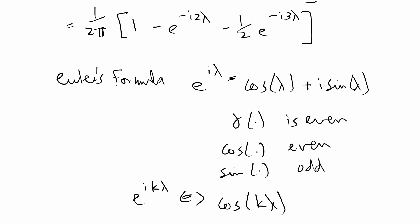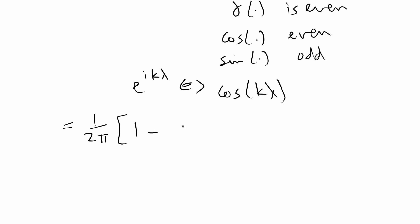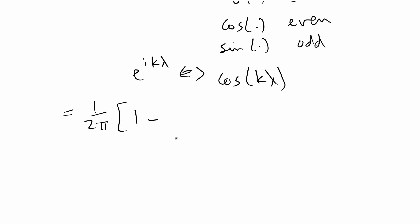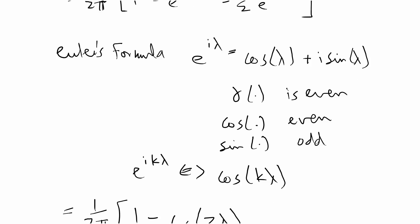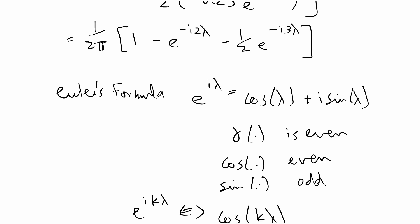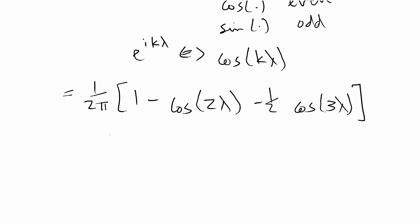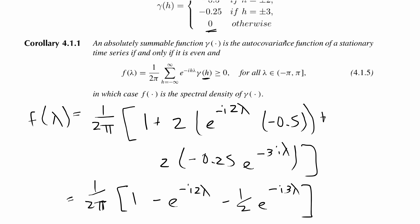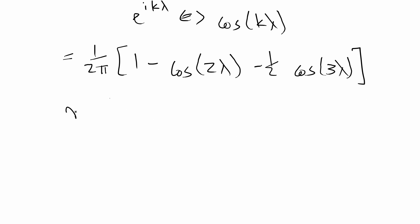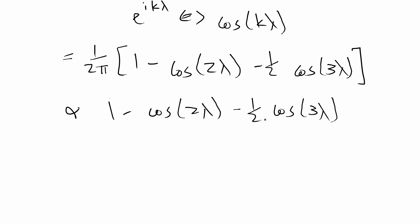Applying Euler's formula, we get 1 over 2 pi times: 1 minus cosine 2 lambda minus one-half cosine 3 lambda. Since the constant 1 over 2 pi is positive, we only need to check whether the expression 1 minus cosine 2 lambda minus one-half cosine 3 lambda is greater than or equal to zero for lambda from negative pi to pi.